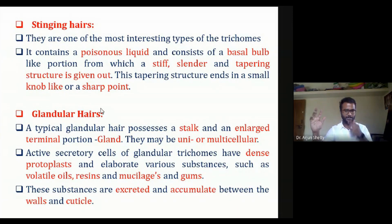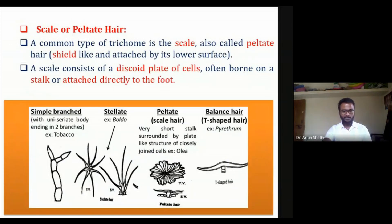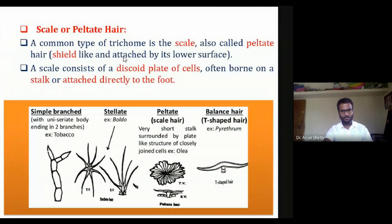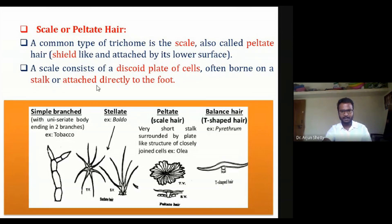One more type of trichome is the scalar peltate type. These are a common type of trichome seen in plants. They are shaped just like a shield — the peltate structure can be viewed from the top.